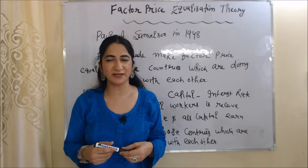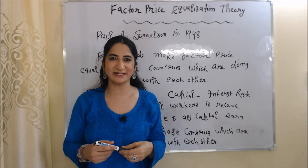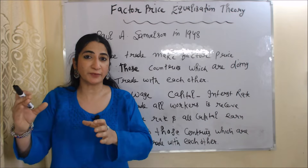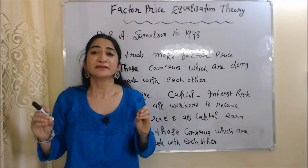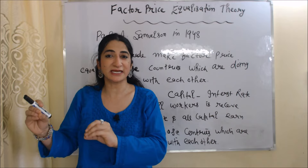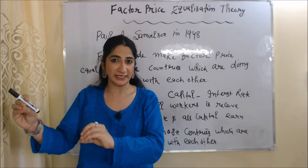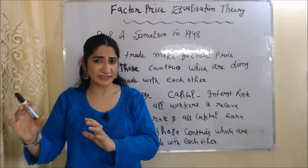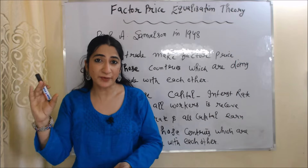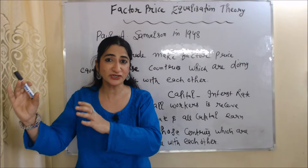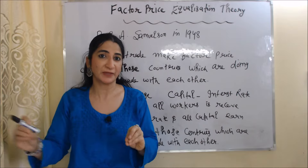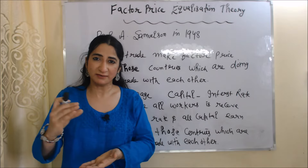Hello everyone, my name is Minnie Seti. I hope you all are staying healthy. Today we are going to talk about Factor Price Equalization theory. This theory is given by Paul A. Samuelson in 1948, and this theory basically states that free trade makes factor prices equal in those countries which are doing trade with each other.